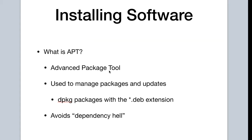APT stands for Advanced Package Tool. It is essentially a management system for dpkg packages, as seen with the extension asterisk.db. It was designed to not only manage packages and updates, but to solve the main dependency issues when installing certain packages.